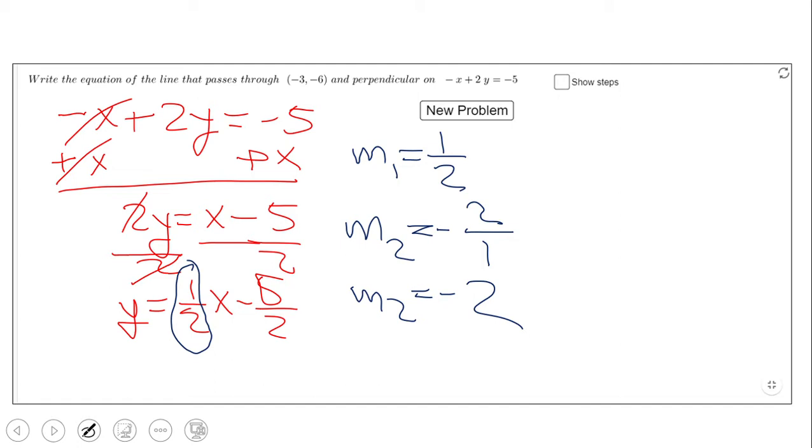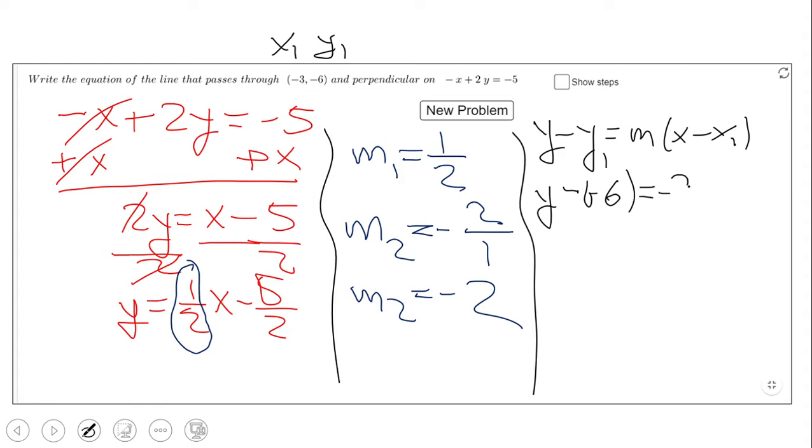Now we go to the last step, which is finding the equation, writing the equation of the line. For that, we're going to use the point-slope form, and we're going to just plug the information in. Don't forget x₁ and y₁ are the coordinates of the given point, and the slope is the slope we found: -2.